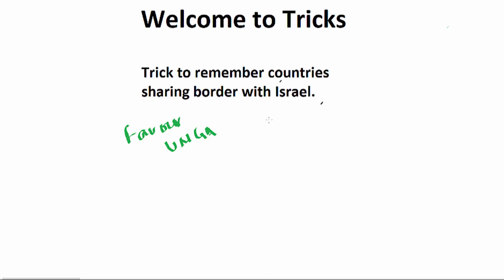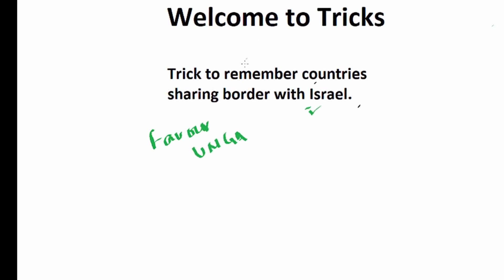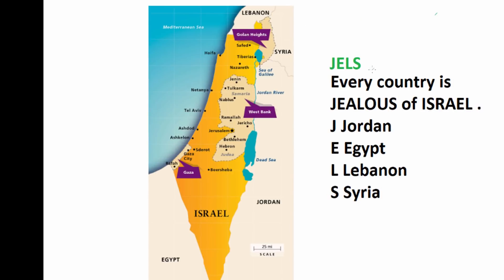So it is important that we know the countries that share a border with Israel, as a question may come from this. This trick has been shared with us by our friend Vikas Mittal — thank you Vikas! If you want, you can post your trick in the comment section and we will make a video on that. The trick is 'JELS' — J-E-L-S: Jordan, Egypt, Lebanon, Syria.